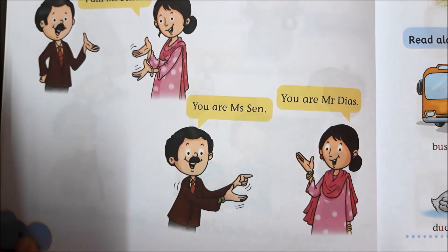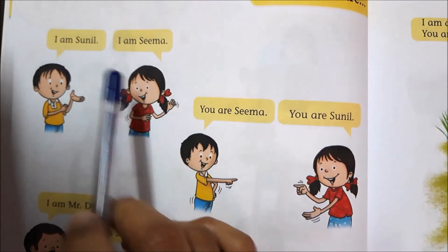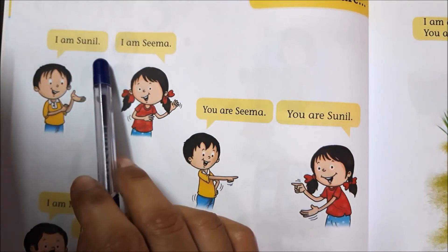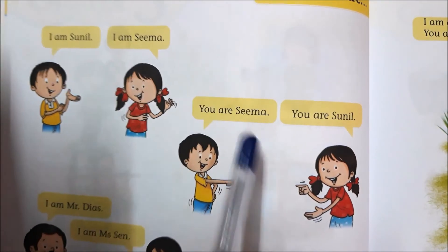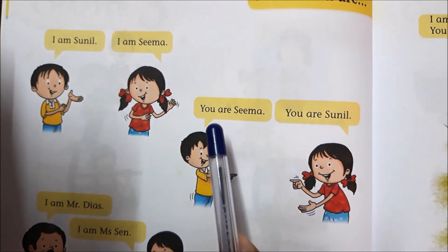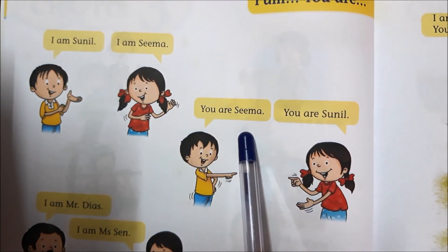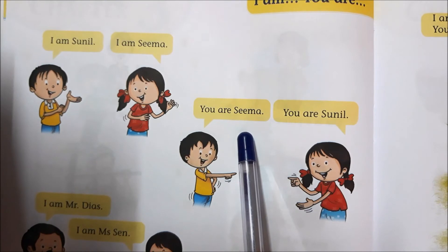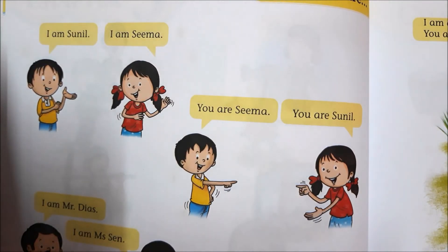Try it a little in your house. You can use your own name instead of Sunil and say I am and your name. And then when you are talking to your sibling, you can say you are and their name. We will do more exercises and there will be some homework for you to practice this further.